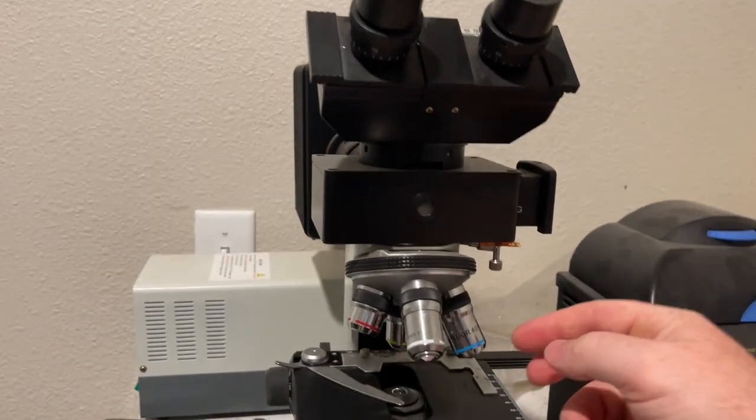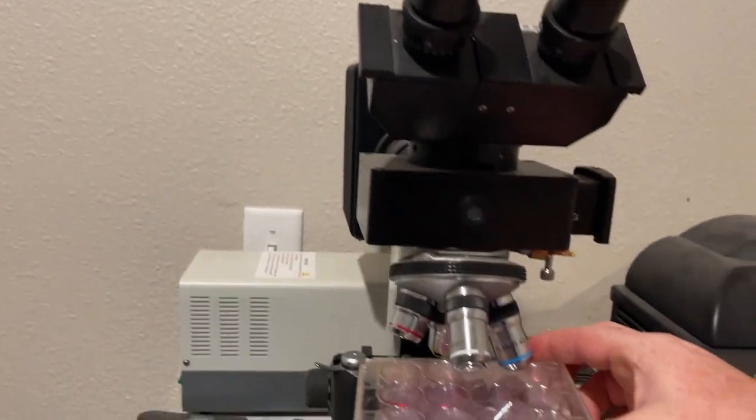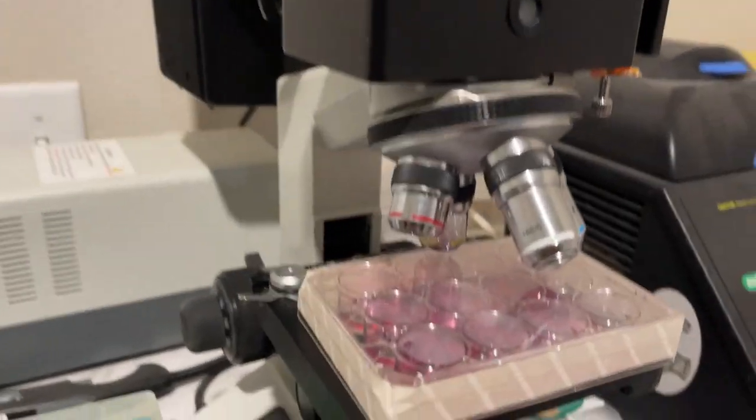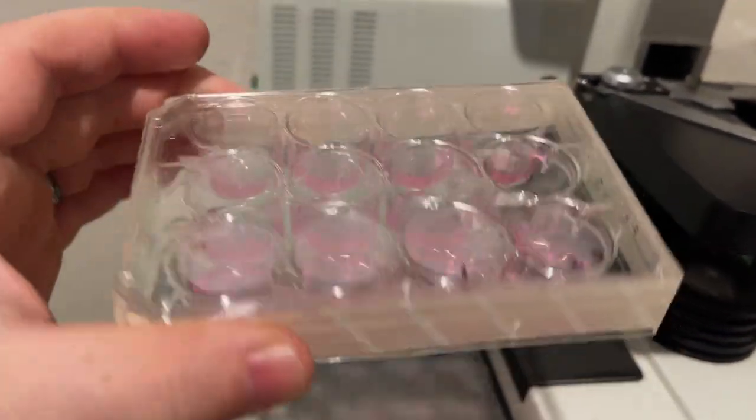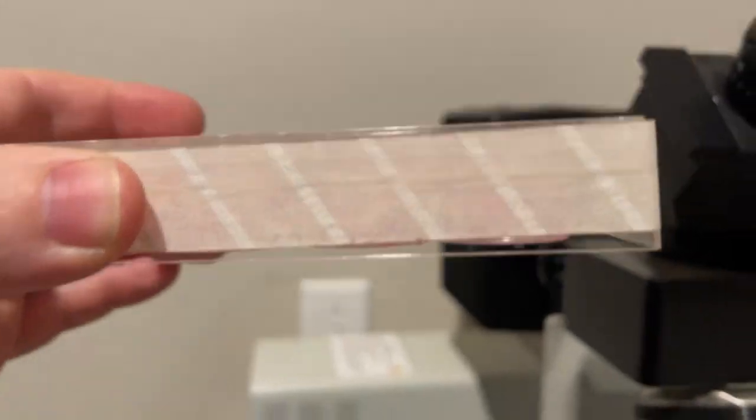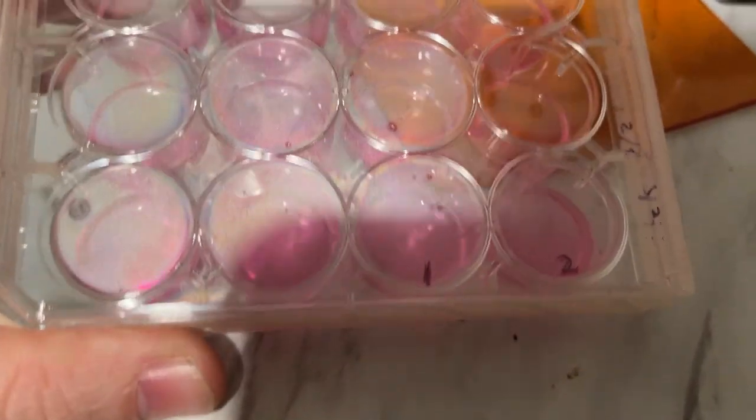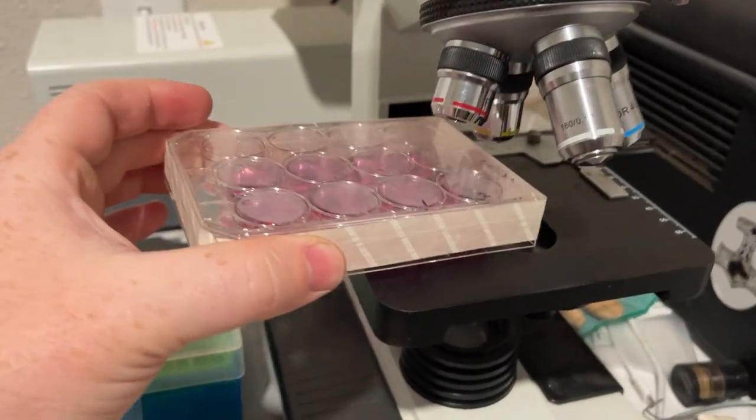This is not an inverted microscope. The microscope sees from the top down. It's for looking at slides. But when you're doing tissue culture, I have 12-well plates with human cells growing in them. These are HEK cells, and I've modified these two wells, well number one and two. And you see the problem.